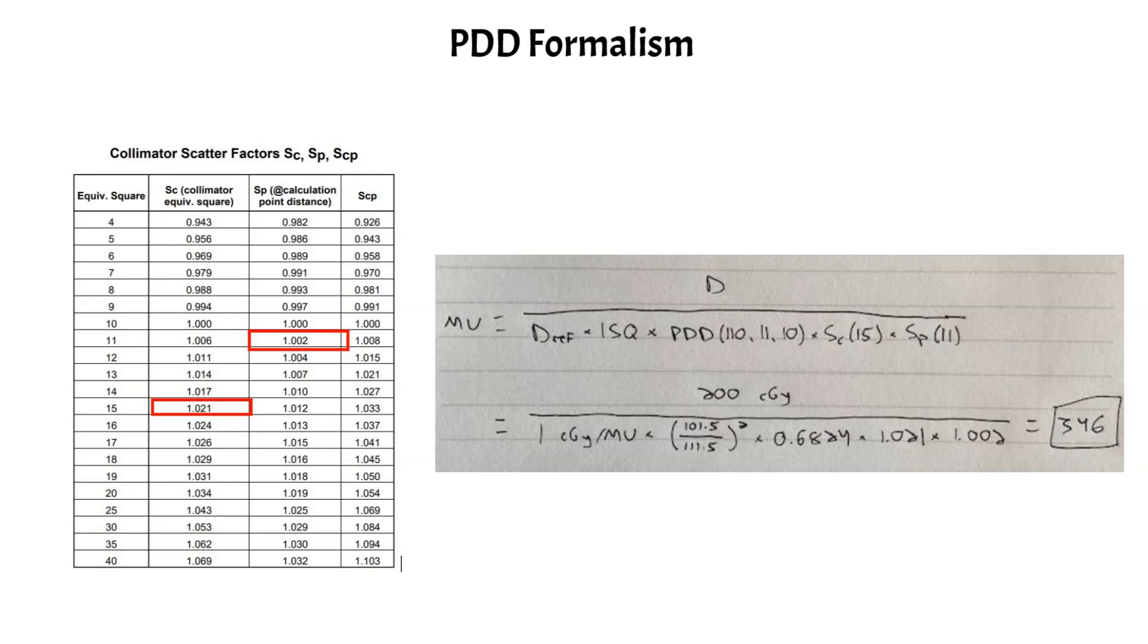And I want to talk a little bit about the inverse square correction here. So here you are taking the dose at the source to calibration distance and correcting it to the new SSD plus D max. So you're moving from the SSD of 100 plus D max, which is 101.5, to the new SSD plus D max, which is 111.5. And that gives us an MU setting of 346. And now we will work through the same exact problem using the TMR formalism.